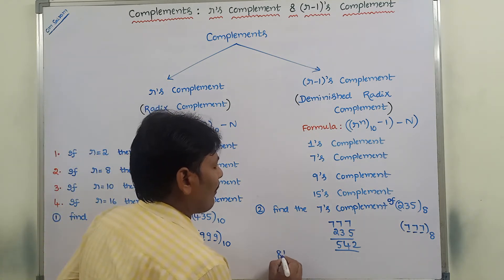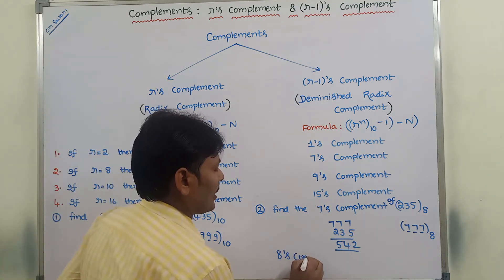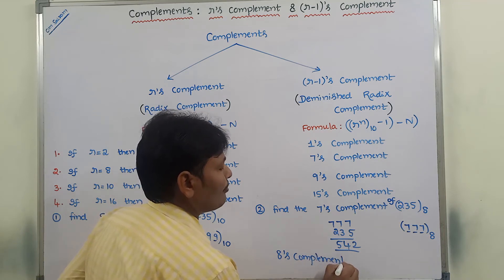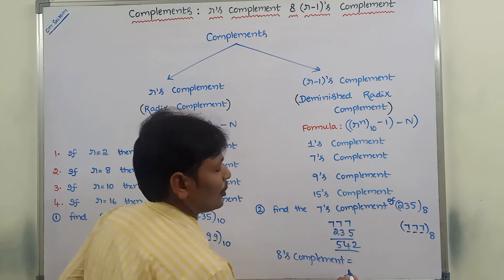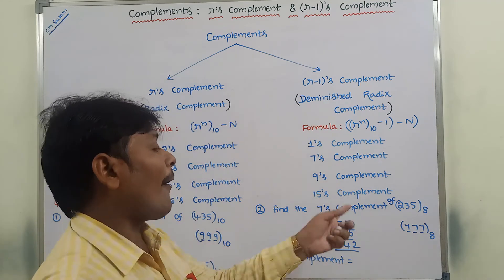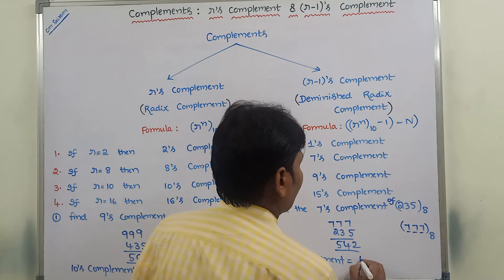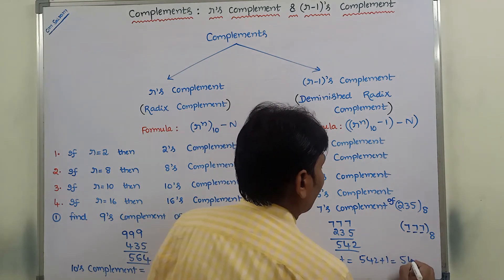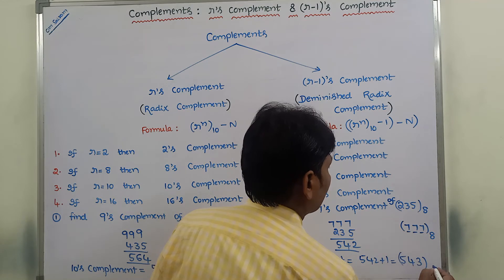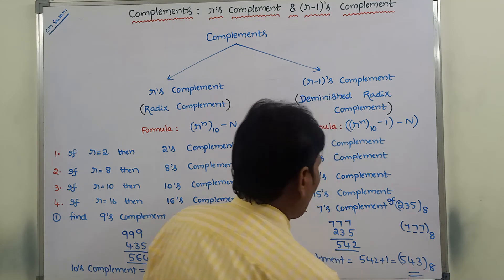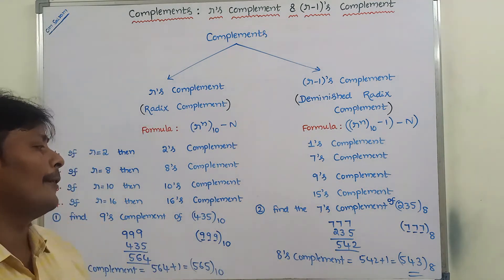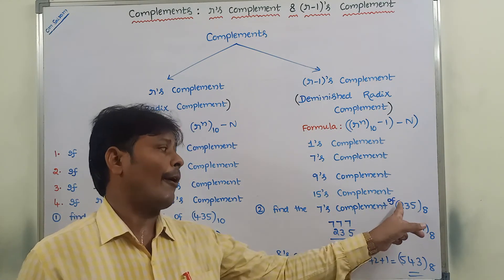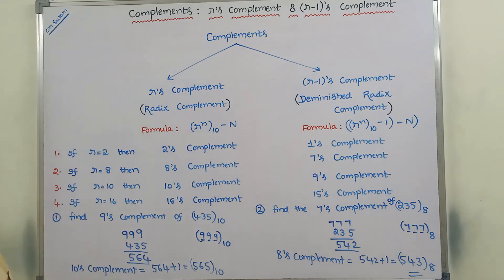Now, what is the 8's complement of 235 base 8? The 8's complement is equal to the 7's complement of 235 base 8, that is 542 plus 1, which equals 543 base 8. This is the 8's complement, and 542 is the 7's complement of this given number.